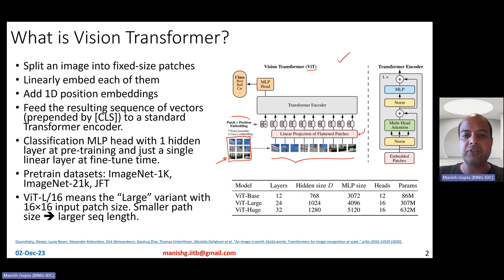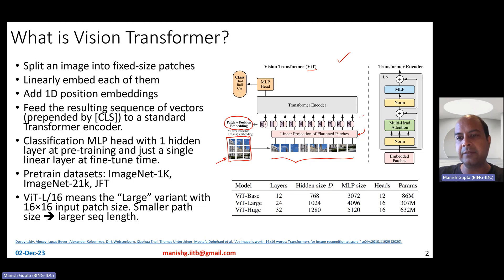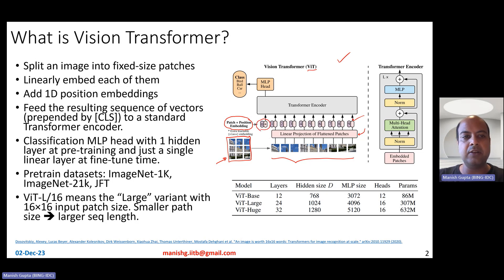On top of these patch visual embeddings, you also add a position embedding. These are one-dimensional position embeddings indicating the position — one to nine in this particular case — as position embeddings for each of those patches. Typically, you also prepend a special token in the beginning called the CLS token, just like you do in standard Transformer Encoder models, and then you feed it to a Transformer Encoder.